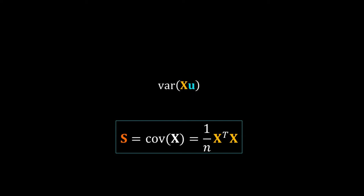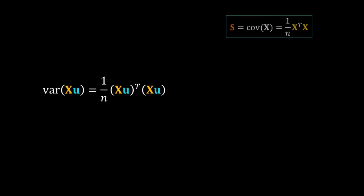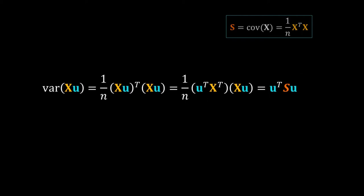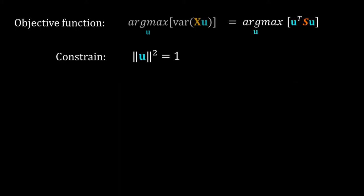Before we do the optimization, let's calculate the variance of Xu explicitly. Using the same formula as the covariance matrix, variance of Xu equals 1/n times (Xu) transpose times (Xu). Taking the transpose of Xu gives u transpose times X transpose. Rearranging, I get u transpose times (X transpose X divided by n) times u. This X transpose X divided by n equals S, the covariance matrix. So the variance of Xu is equal to u transpose S u.